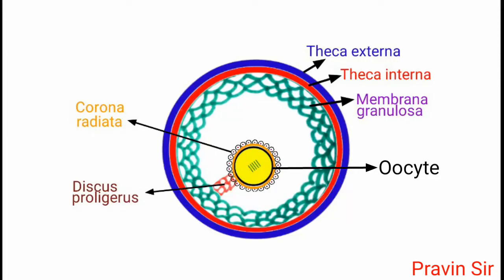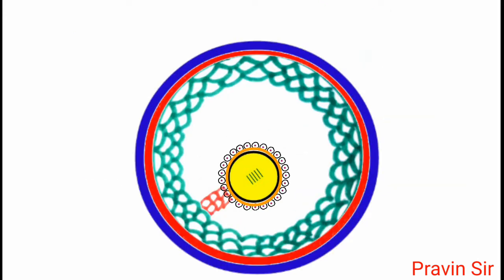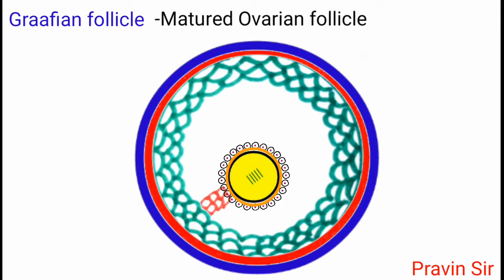Hello students, today let's revise about the structure of Graafian follicle. Graafian follicle is a mature ovarian follicle.